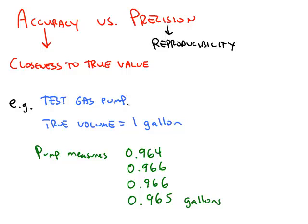For example, if we're testing a gas pump and we know that we're putting one gallon of gas through this gas pump, and we're measuring how much the gas pump actually measures, if we get these numbers, we can talk about the accuracy separate from the precision.